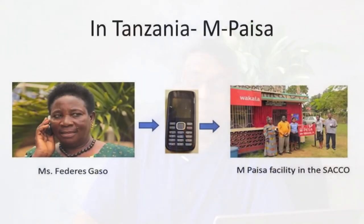I met a lady in Bukoba, Tanzania, who is managing a savings and credit cooperative for women called SAKO. She and the members of SAKO had to travel a long distance from their villages to come to town for depositing their savings. This involved substantial travel cost and other opportunity costs. Then SAKO introduced the M-PESA system, and now the women are able to transfer money sitting in the village to the SAKO without traveling to town. This has improved savings and reduced transportation costs as well as the drudgery for the women.